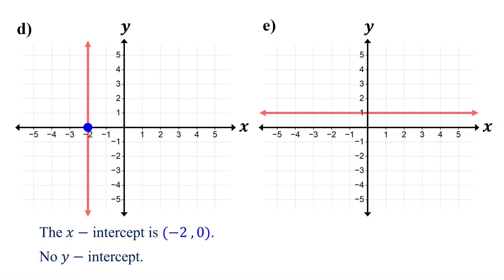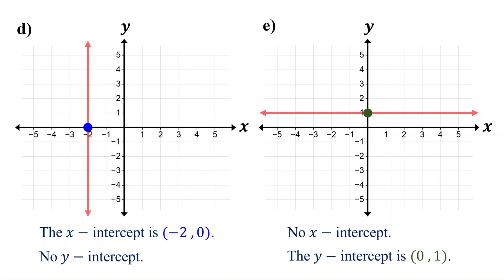What if the line is horizontal? Notice the line crosses only the y-axis, so it has only a y-intercept. To find it, first locate where the line crosses the y-axis, then identify the coordinates of this point. The x-value is 0 and the y-value is 1. Therefore, the y-intercept is the point (0, 1). Since the line does not cross the x-axis, it does not have an x-intercept.